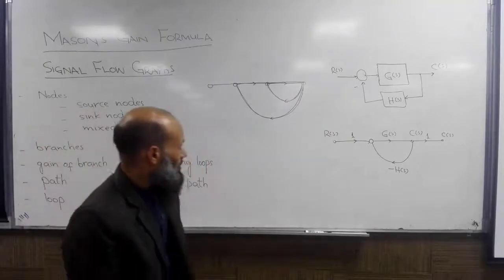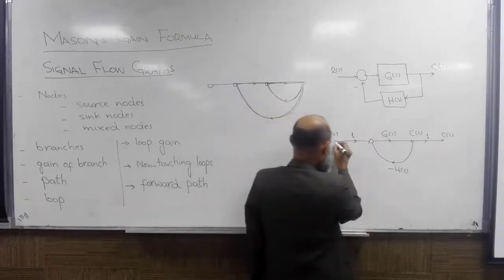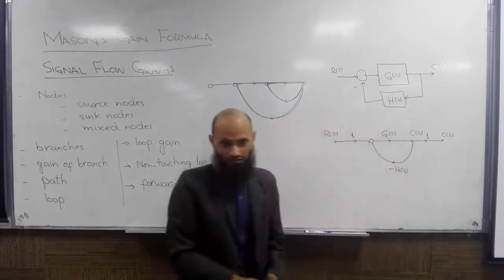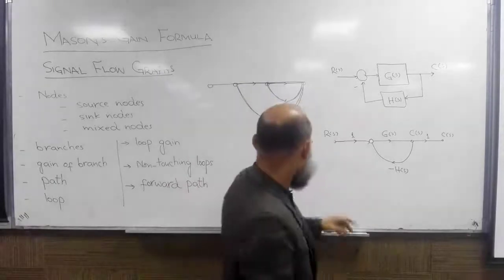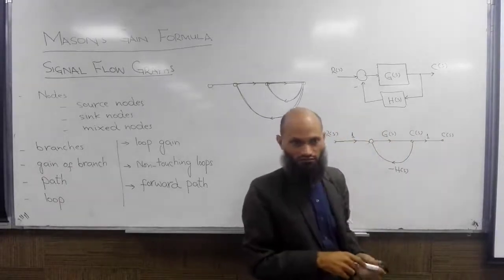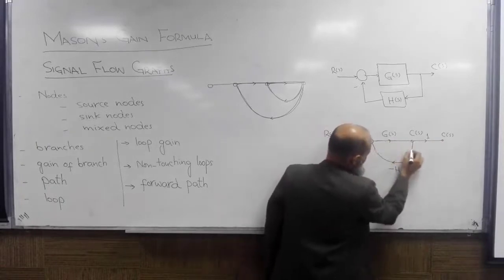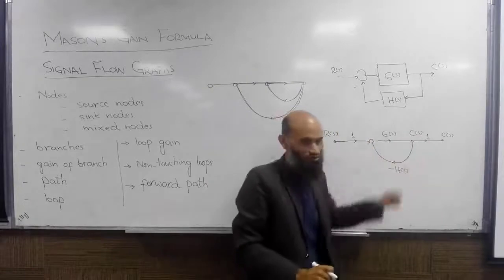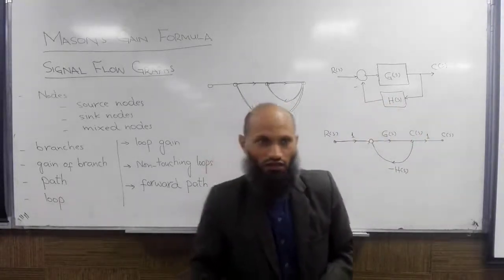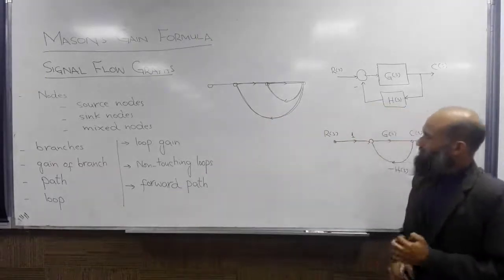Forward path: we can move from the input node to the output node by following different paths. A forward path is a path from the input signal to the output signal where you cannot pass through any one node more than once. For example, in a particular system there may be only one forward path, because following another route would require passing through a node multiple times. In a forward path, you pass through each node only one time.